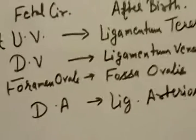Then ductus venosus — its remnant is ligamentum venosum. These two ligaments are liver ligaments: ligamentum teres present in the liver, and ligamentum venosum in the liver. Then foramen ovale, which is the connection between right atrium and left atrium, converts into fossa ovalis in adulthood. Then ductus arteriosus converts into ligamentum arteriosum.